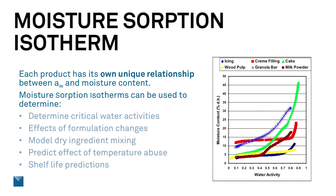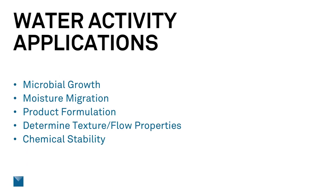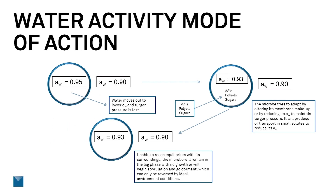Isotherms are also essential for predicting shelf life. So these are the applications we're going to focus on now. First up is microbial growth. Microorganisms need water for growth and they get that water from their surroundings. When an organism is surrounded by a lower water activity than its interior, it will experience osmotic stress. In this example, the water activity inside the cell is 0.95, and outside the cell the surrounding environment has a water activity of 0.90. So we know from what we've learned about energy that water moves from higher to lower water activity.